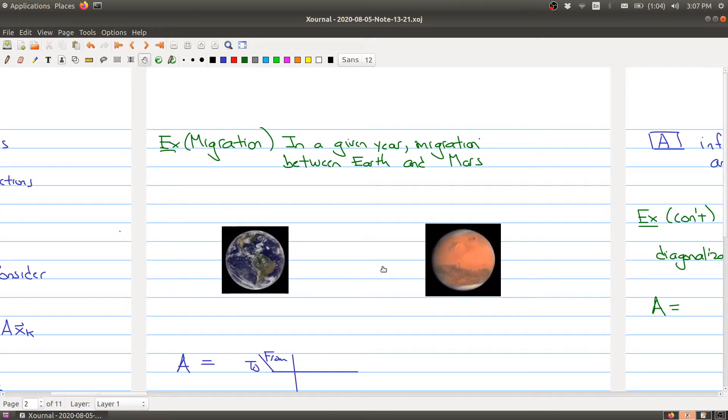Let's look at migration between planets. We're in the future and can travel between Earth and Mars. We have Earth on one side, Mars on the other. In a given year, 5% of Earth's population moves to Mars and 3% of Mars' population moves back to Earth. The other 97% on Mars stay on Mars, and 95% of people on Earth stay on Earth. This is a migration system between two planets.